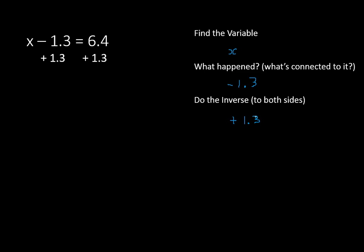So we have 1.3 being added to both sides. Negative or minus 1.3 plus 1.3 leaves us with x by itself on the left side of the equation, and 6.4 plus 1.3 gives us 7.7 as our final answer. x is equal to 7.7.